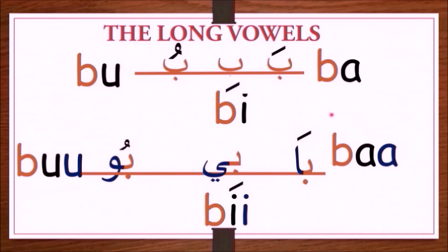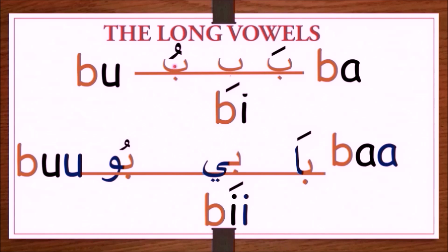Now I shall explain the long vowels using the letter ba. Here is ba with Fatah alone, and it is pronounced as ba. With Kesro it is pronounced as bi, and with Domma it is pronounced as bu.